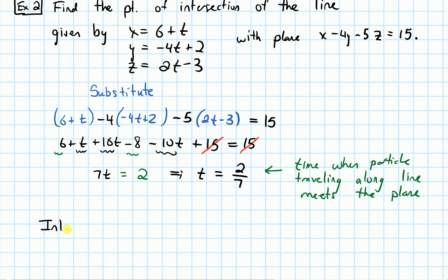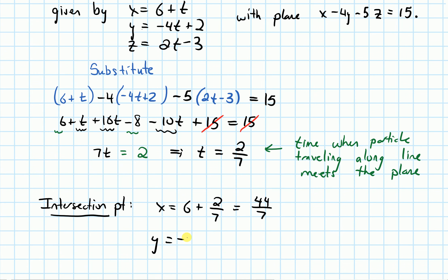So if I want the intersection point, what we do is take this time and plug it into the equation for x and y and z. For x, we get 6 + 2/7. Getting a common denominator, this is 44/7. y equals negative 4 times t, so times 2/7, plus 2. If we simplify this, this one ends up being 6/7.